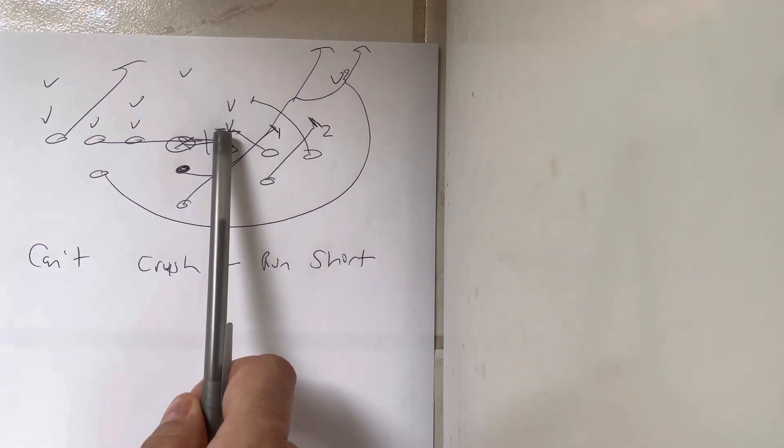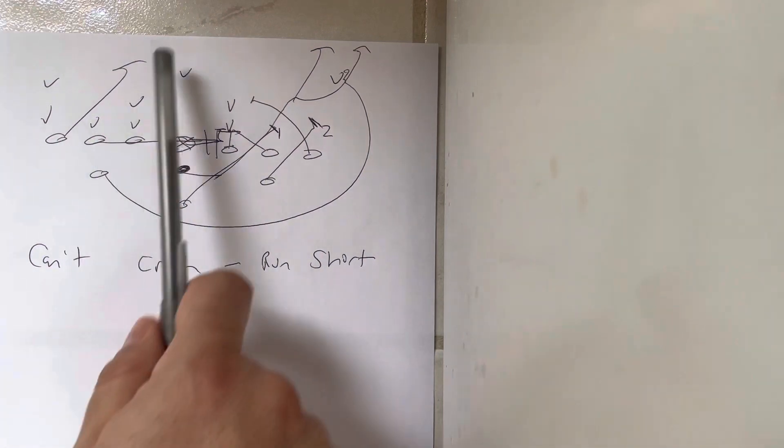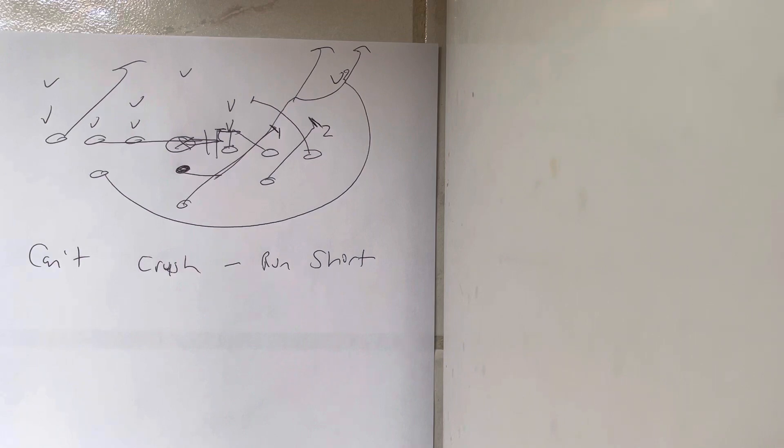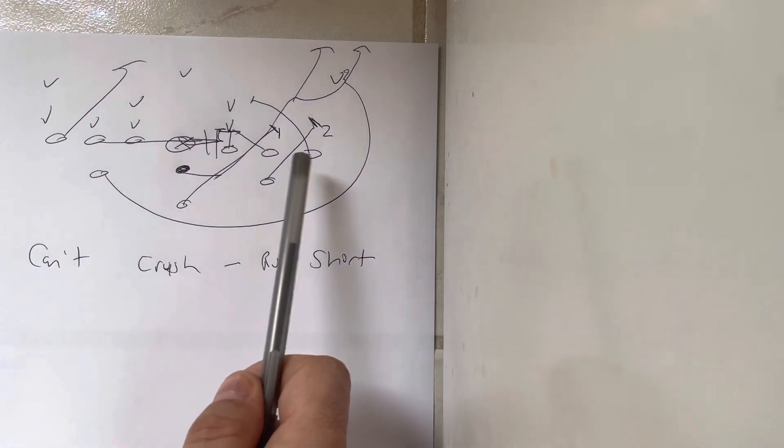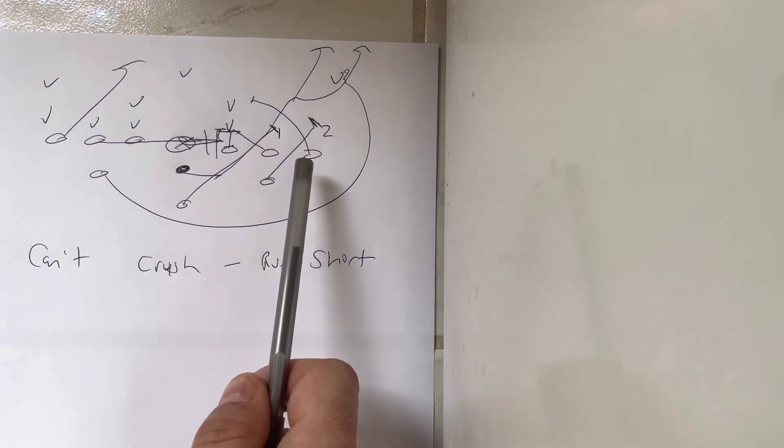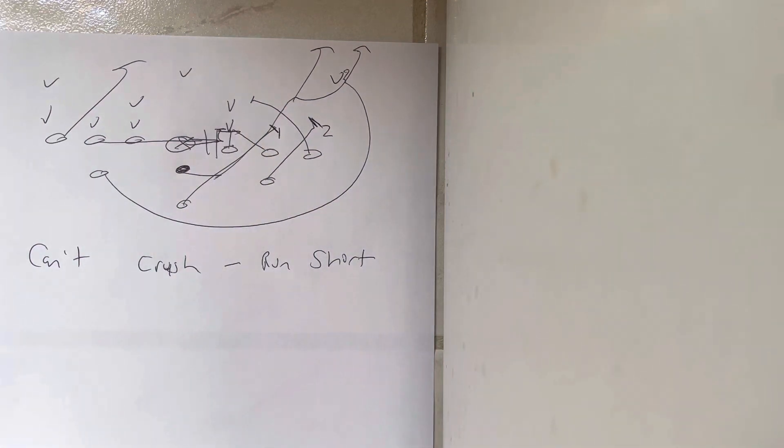So you run the zone dive. You get the triple on the action key, the double scoop on the backside with the cutoff block. The receiver's going to do the same thing as he does on regular zone dive. He's going to block the nearest inside backer.